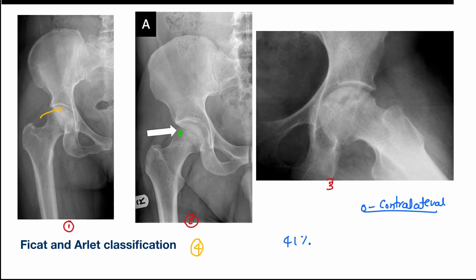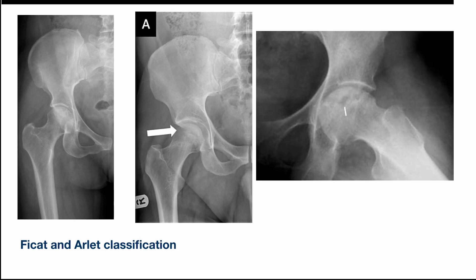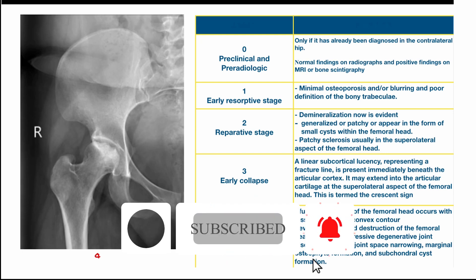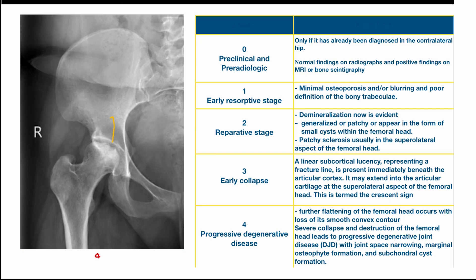Stage 3 is called early collapse. There is a linear subcortical lucency representing a fracture line present immediately beneath the articular cortex. It may extend into the articular cartilage at the superolateral aspect of the femoral head, and this is termed the crescent sign, which is very characteristic of stage 3. Stage 4 is called progressive degenerative disease, with further flattening of the femoral head, loss of smooth convex contours, severe collapse and destruction, leading to joint space narrowing, marginal osteophyte formation, and osteochondral cyst formation.